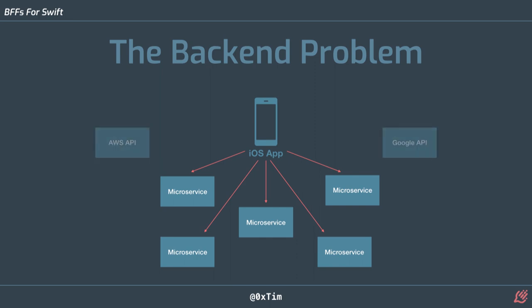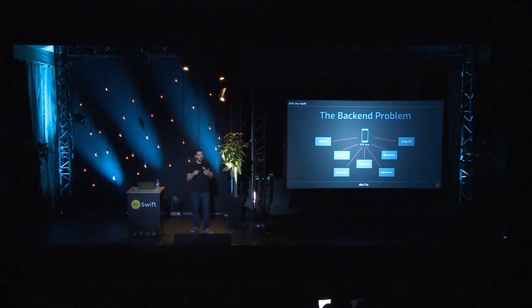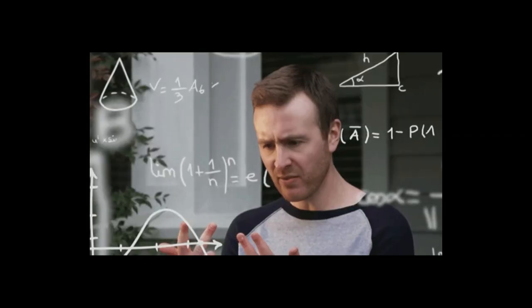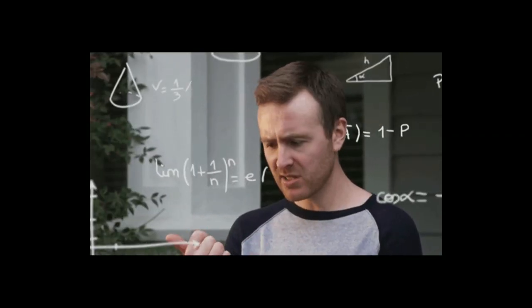We haven't even talked about calling third-party APIs. Maybe you're using AWS functionality or Google functionality, or calling a weather API to find out what the current weather is. You have to manage all of these and manage the credentials for all of them and keep them secure, which can leave you as a developer feeling slightly confused because you have this really complicated app.